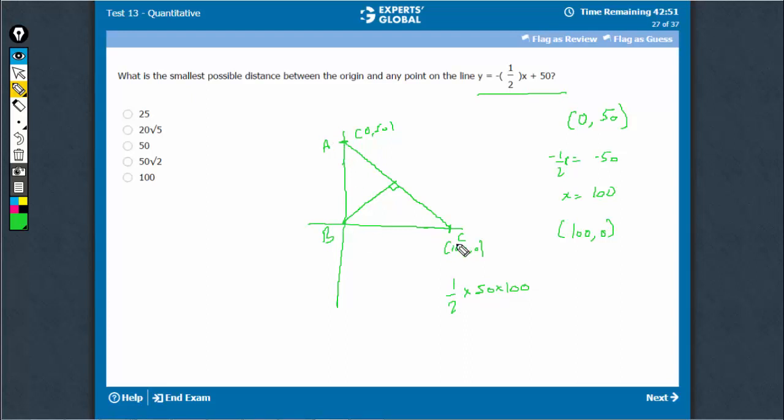half times AB times BC. And we should get the same value when we do half times, let's call this perpendicular P, where P is the shortest distance we require, times AC.